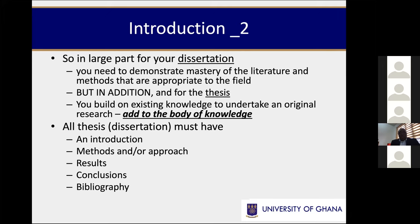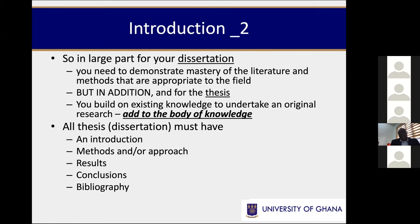For the thesis generally at UG, it has largely five key components, although there's a preliminary section that precedes the main thesis. The five components are: an introductory part, a methods part, the main results, a summary of your findings and conclusions, and also as part of the conclusions some recommendations — not just for policy but also for future research — and a section which outlines your bibliography.